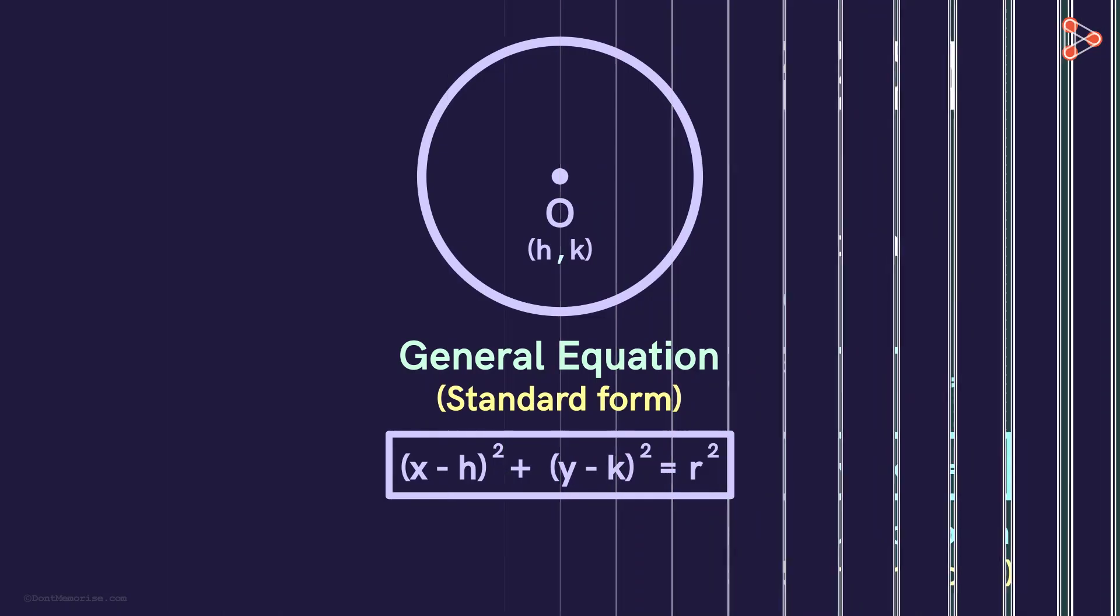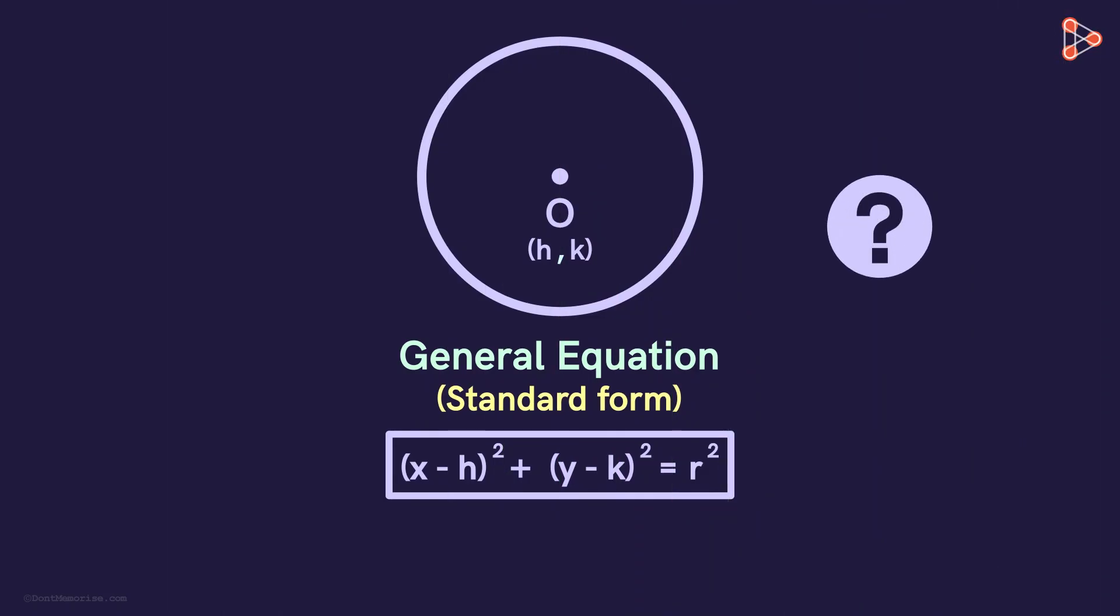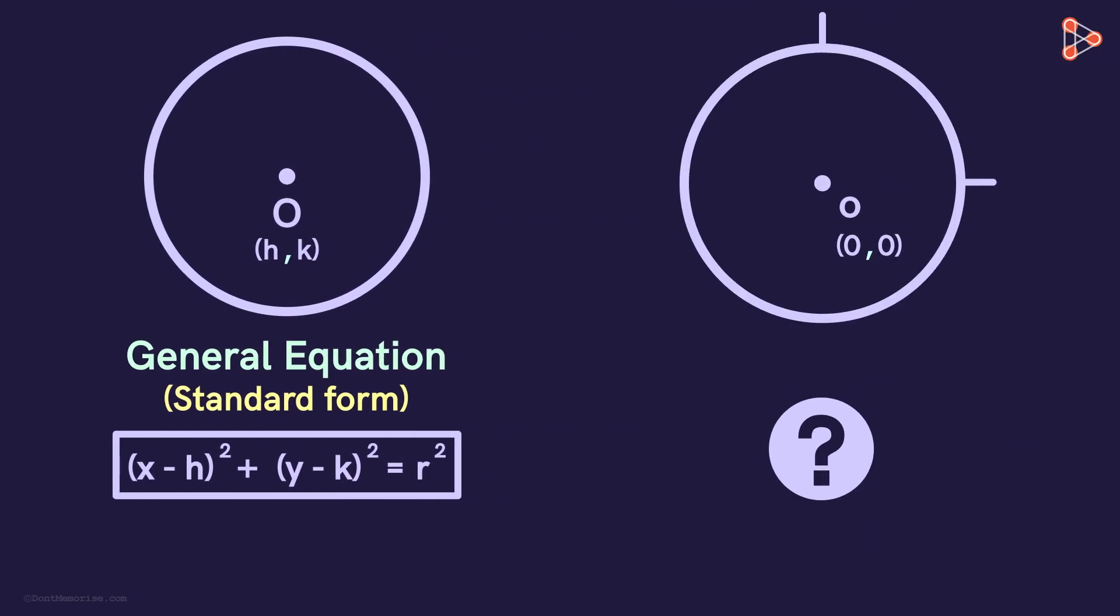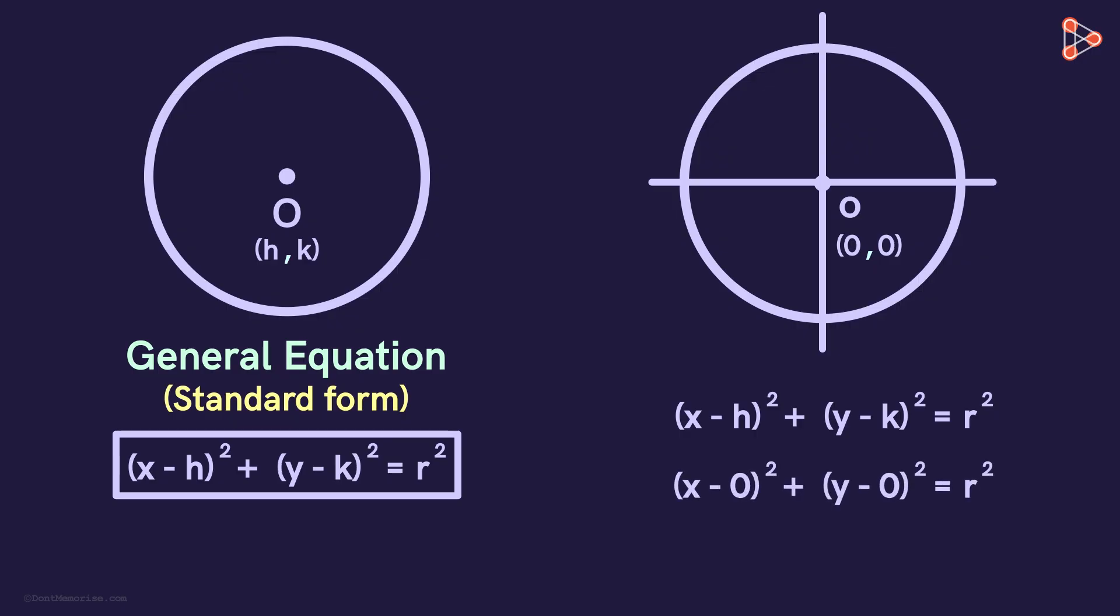Now that we've seen the general equation of a circle, can you tell me the equation of a circle whose center lies on the origin? Since the center is the origin, the values of H and K become zero. Substituting these values in this equation, we get this. And solving it further, we get this. This is the equation of a circle with the origin as its center.